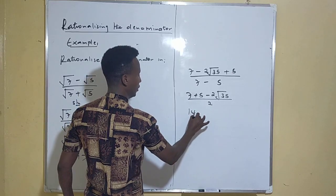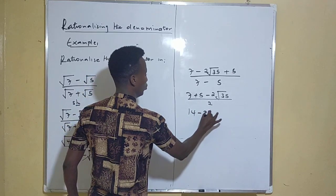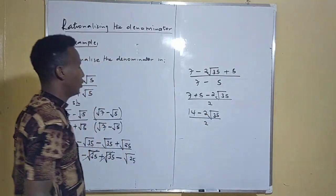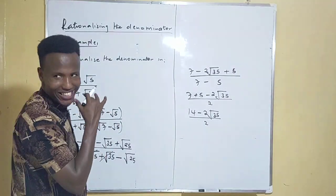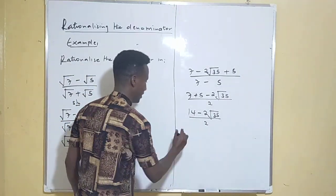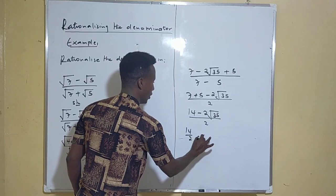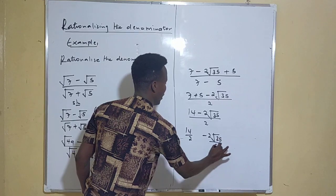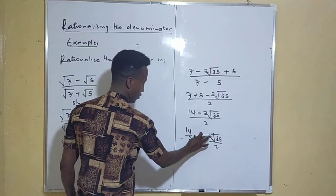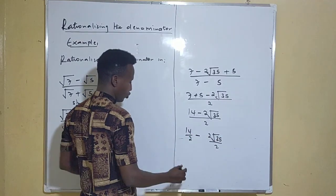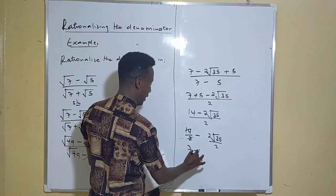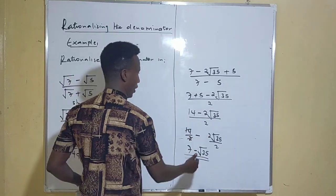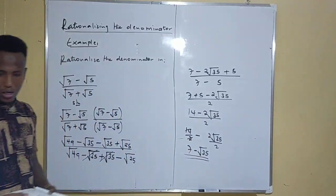We have (14 minus 2 root 35) divided by 2. You can separate these: 14 over 2 minus 2 root 35 over 2, giving you 7 minus root 35. You can leave your answer like that. That is the final answer for your information.